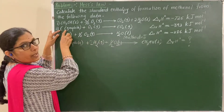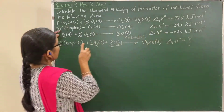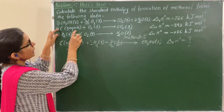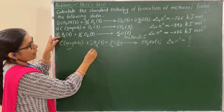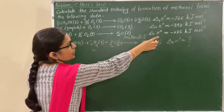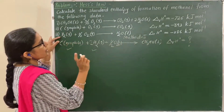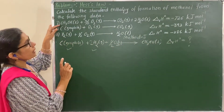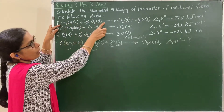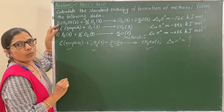Now the third method: the enthalpy of combustion of graphite is known, the enthalpy of combustion of hydrogen is known, and the enthalpy of combustion of methanol is also known. We will find the enthalpy of reaction using the combustion formula I have given.